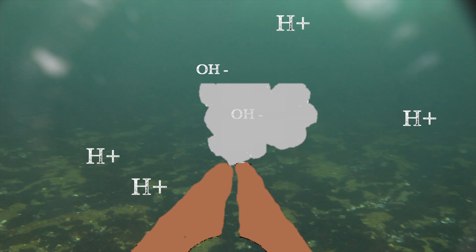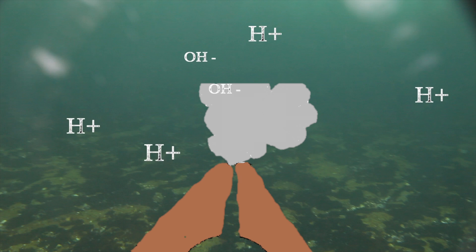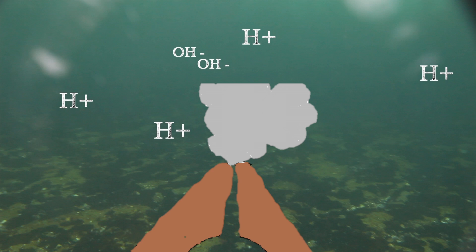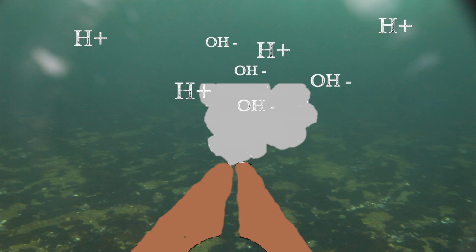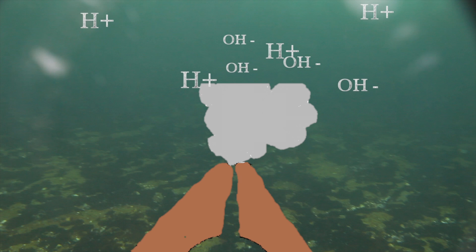These hydrothermal vents belch out a mineral-rich broth in scalding hot water to form the dark black smoke arising from these chimneys. The alkaline, mineral-rich waters from the hydrothermal vents react with the acidic waters in the ocean to form a proton gradient, which provided the potential energy in creating the first sparks of life.